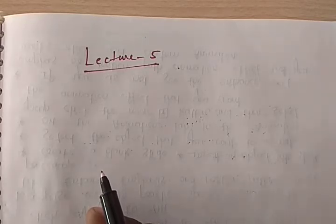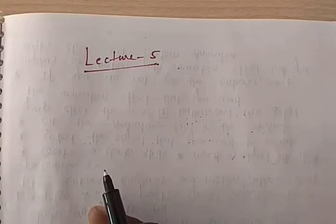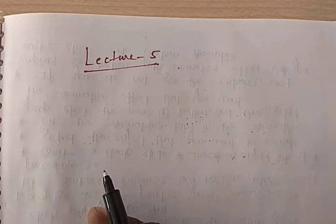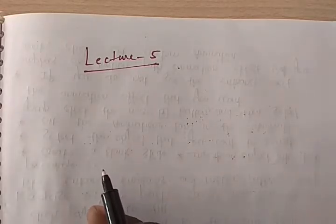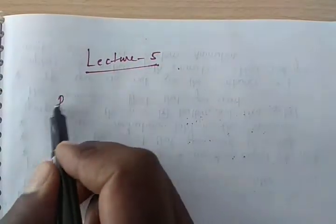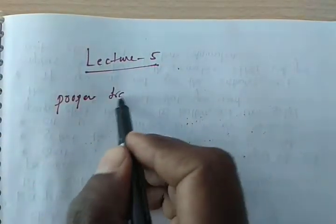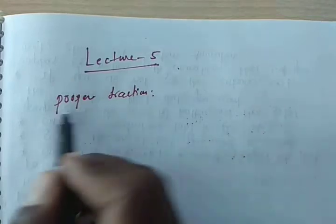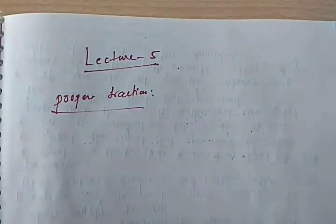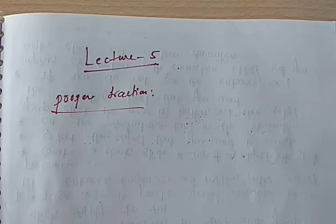We already know rational fractions are two types: the first one is proper, and the second one is improper. First, we will see how to divide a proper fraction into a partial fraction. After completing proper fractions, we will see how to divide an improper fraction as a partial fraction.